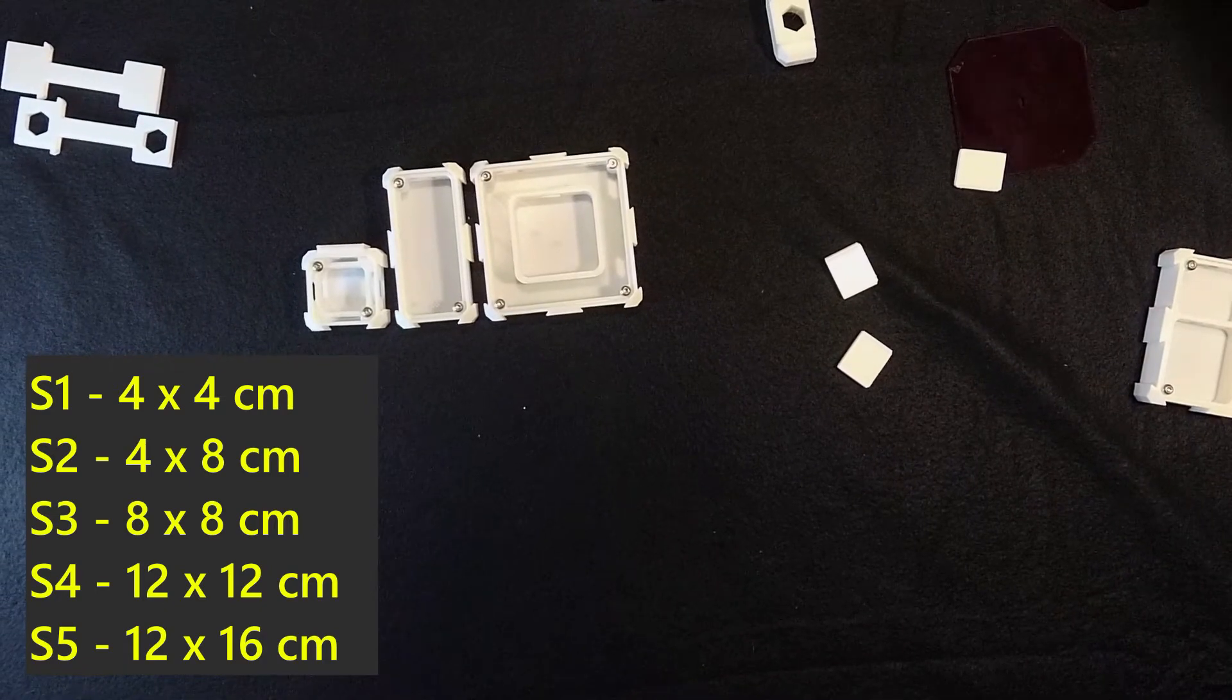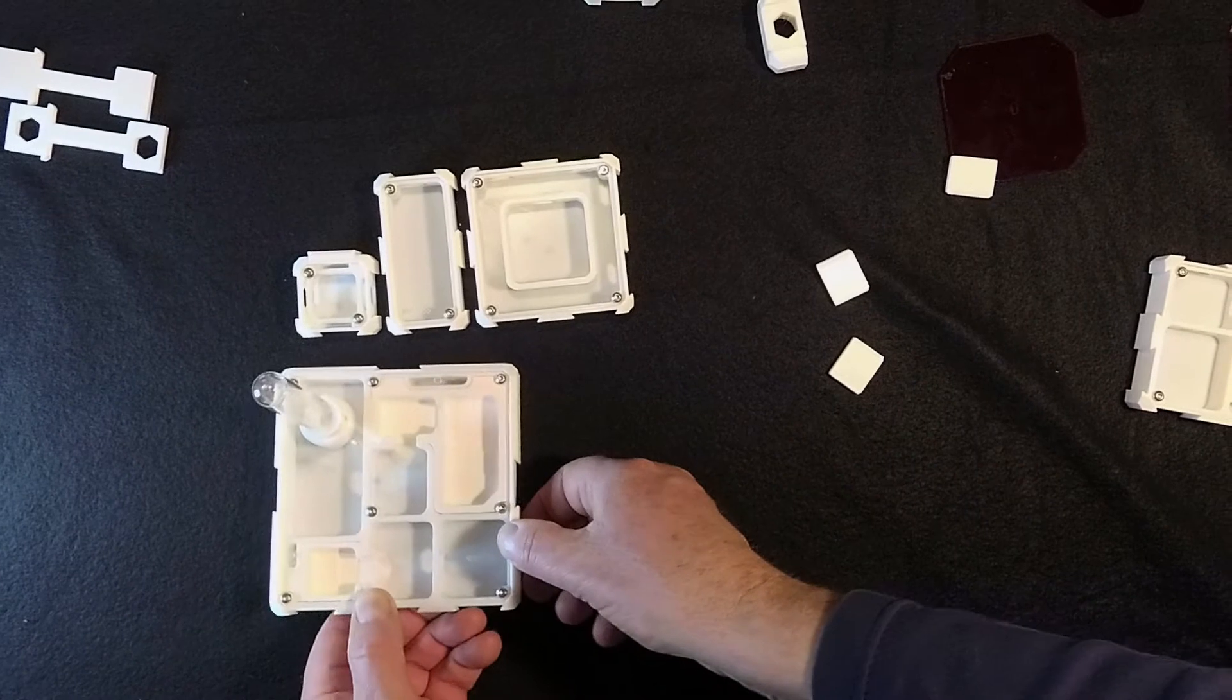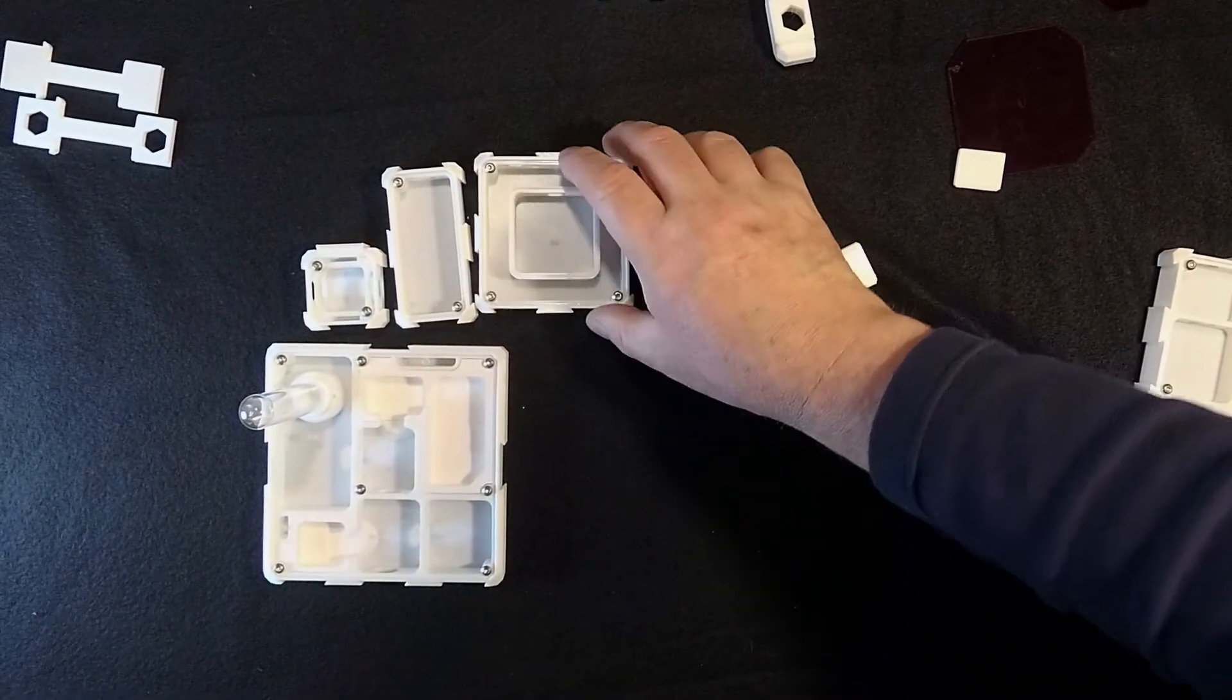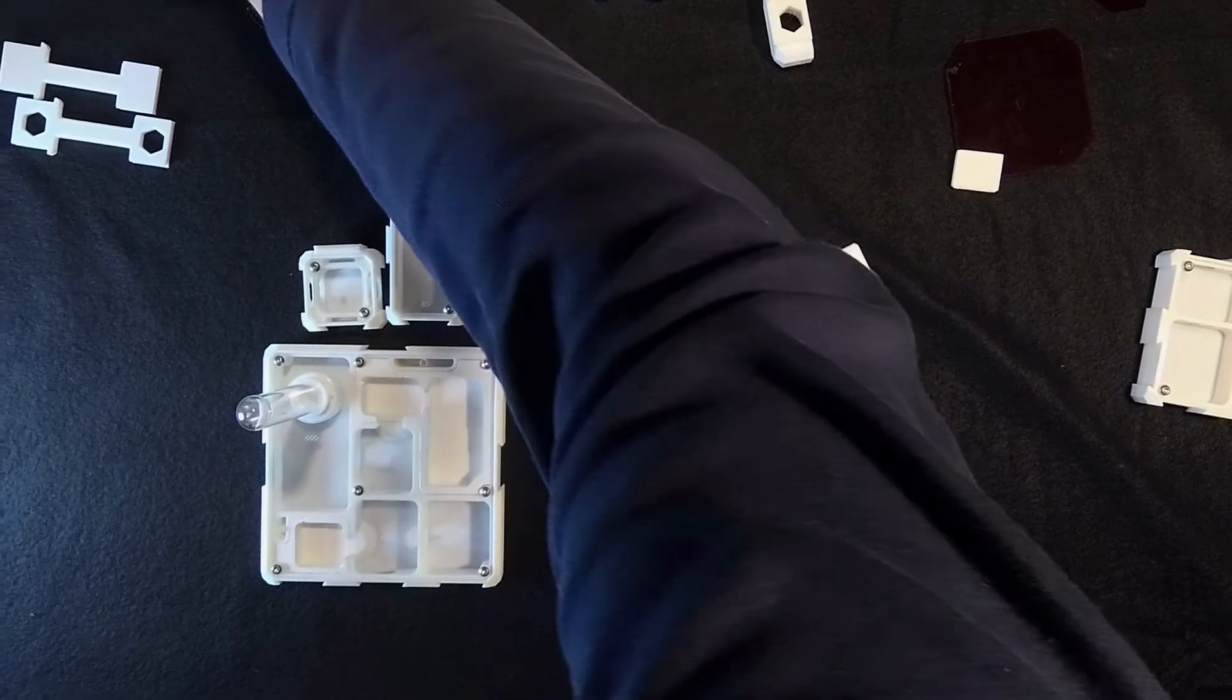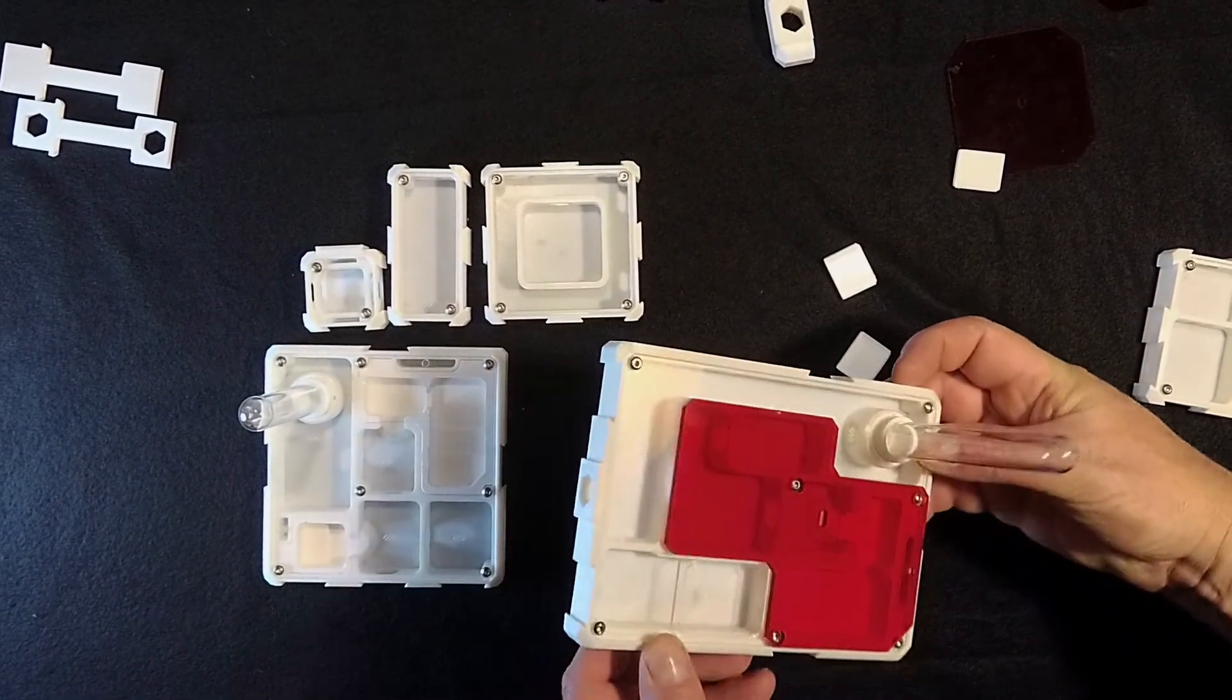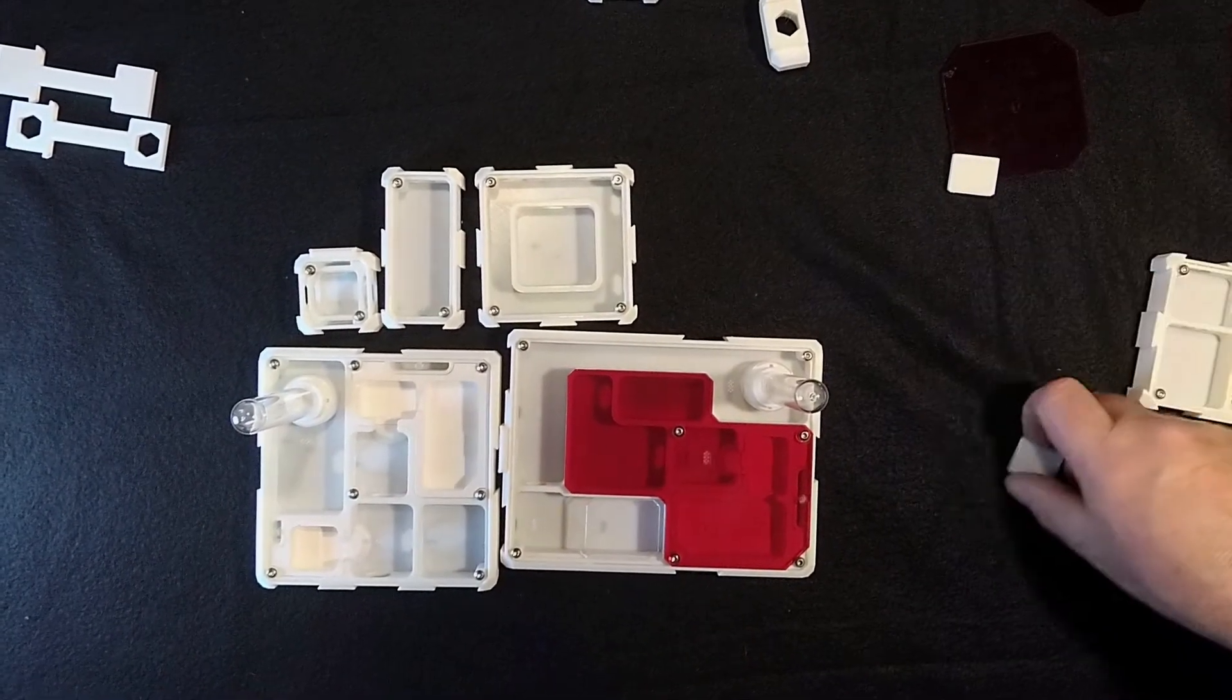And then we have the S4, which is 12 by 12 cm. This one is a complete nest, you see, with moist chambers and water provider. And I also have an S5, which is also a complete nest. The S5 is 12 by 16 cm.